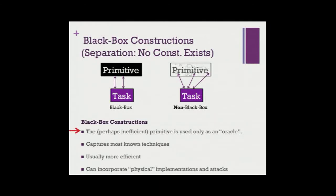What is the black-box framework? If you think of a cryptographic construction in your mind, most probably it's going to be a black-box one, because most of our techniques in crypto are black-box. What do we mean by black box? You want to do some task using some primitive like a one-way function. You really don't look at the code of this primitive — you only use its input-output behavior. As opposed to a non-black-box approach, where you look inside the code and rely on it being efficiently implemented.